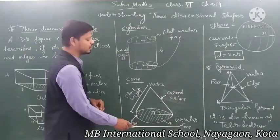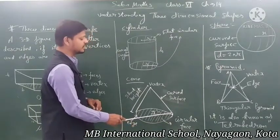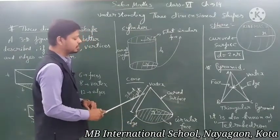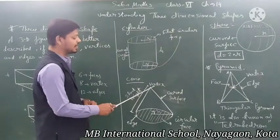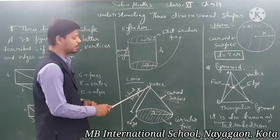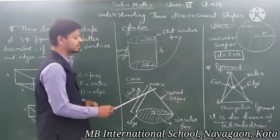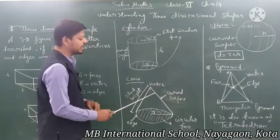The circular face is at the bottom, and at the top there is a vertex — the topmost pointed part is called the vertex of the cone.